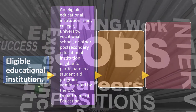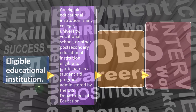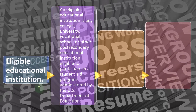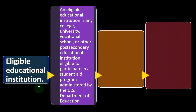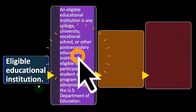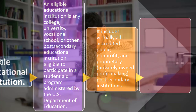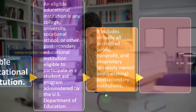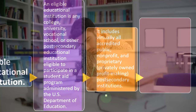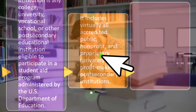An eligible educational institution is any college, university, vocational school, or other post-secondary educational institution eligible to participate in a student aid program administered by the U.S. Department of Education. Most of them are, because that's how they get a lot of their funding — through people taking out loans to pay for education. This includes virtually all accredited public, non-profit, and proprietary privately-owned profit-making post-secondary institutions.